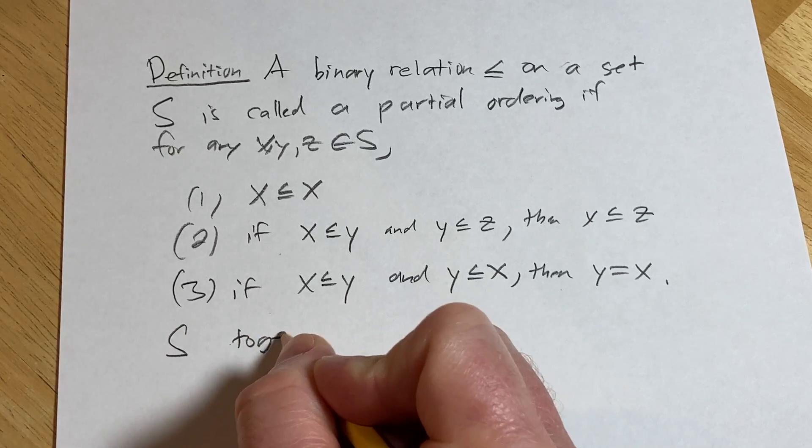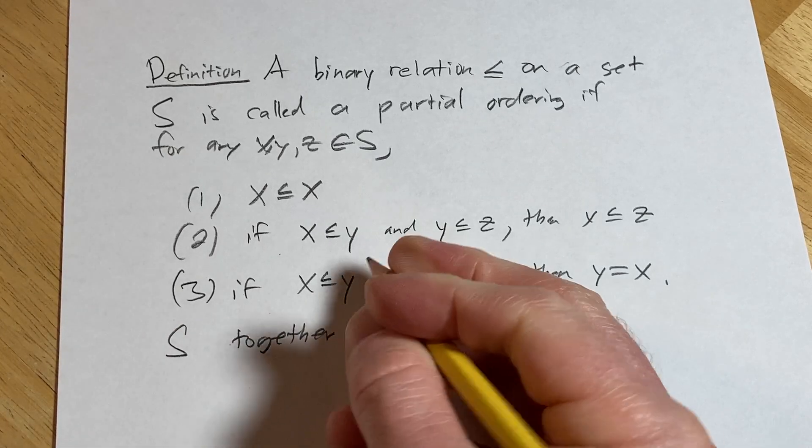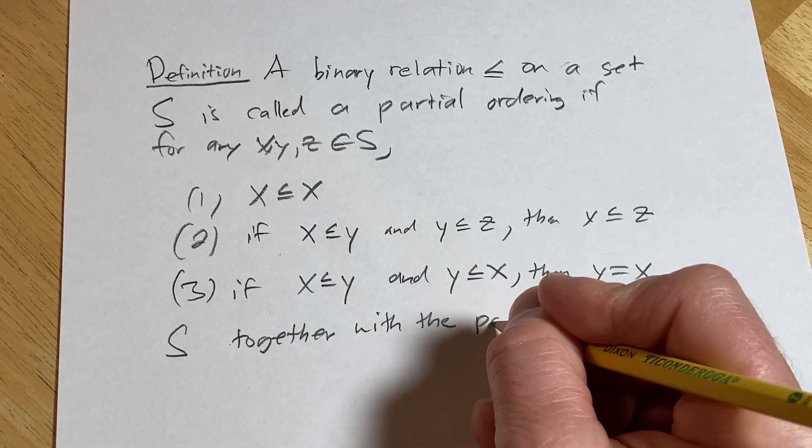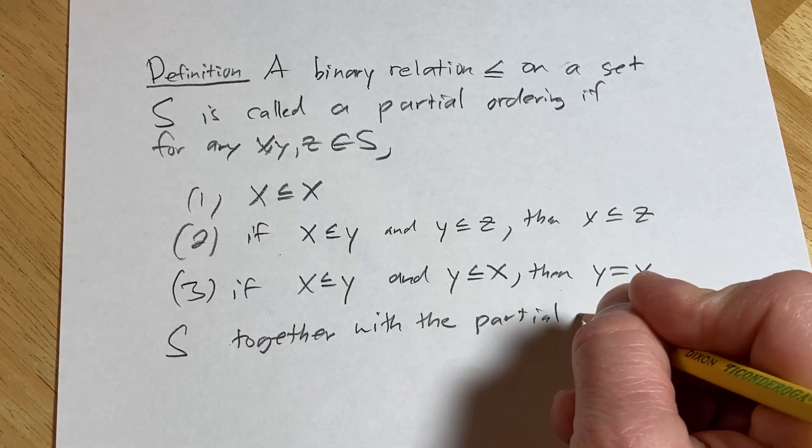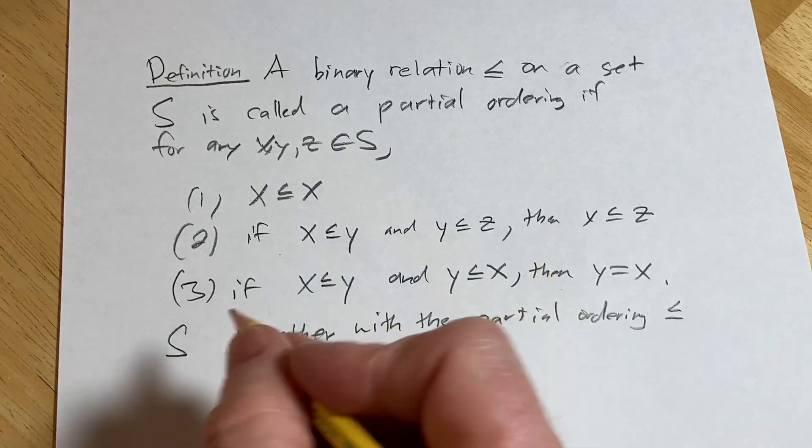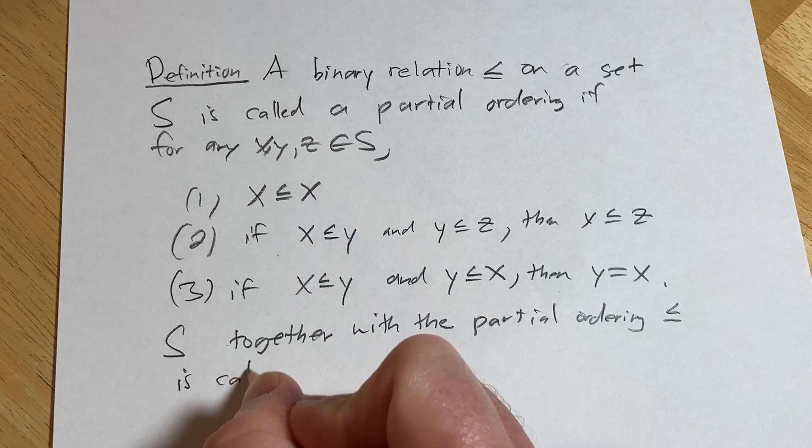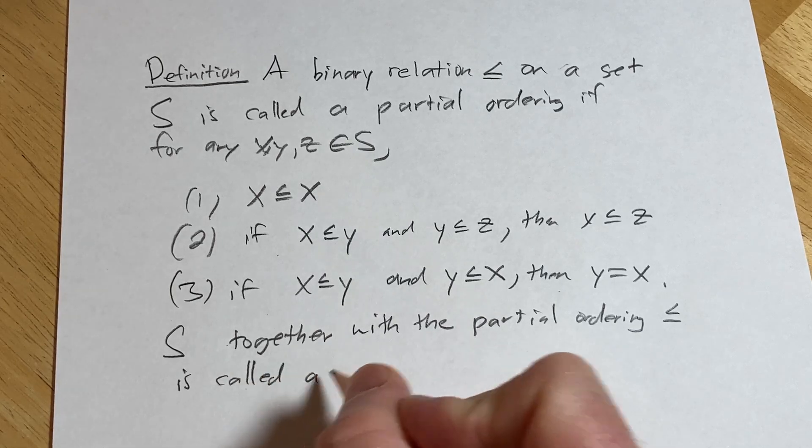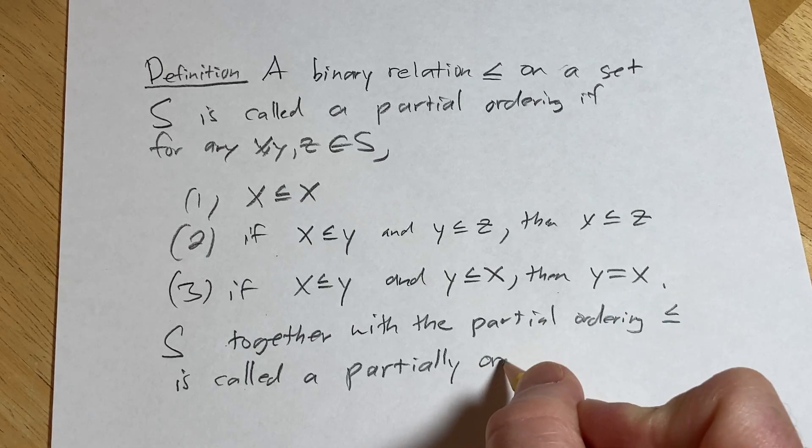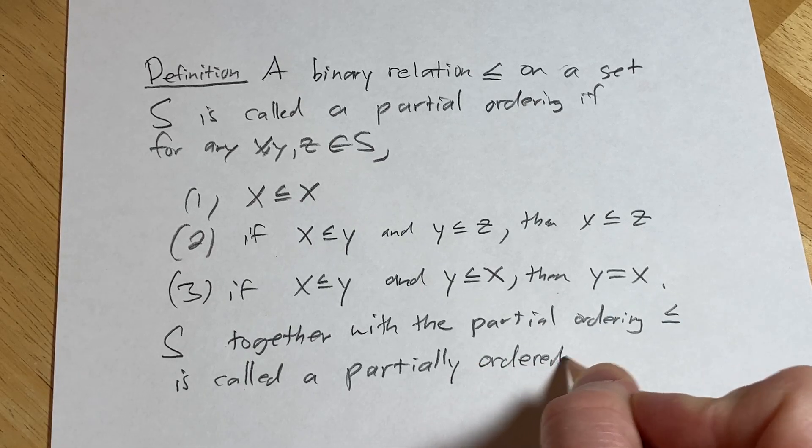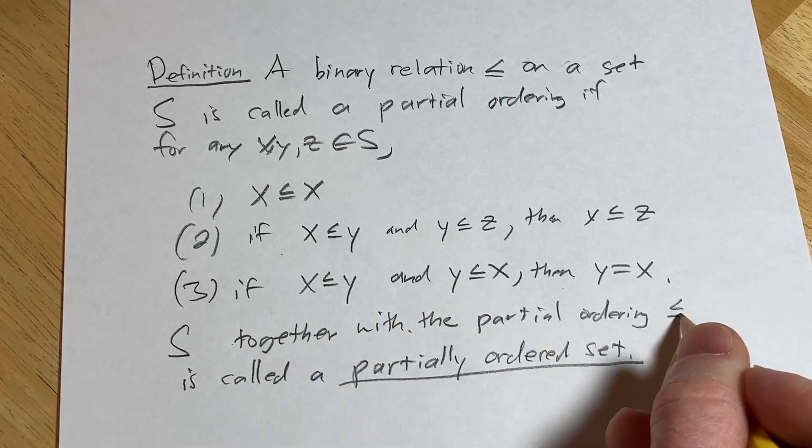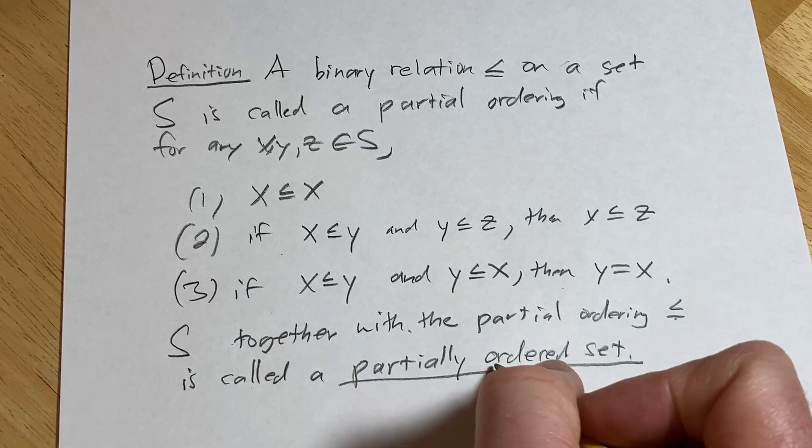S together with the partial ordering that we have defined is called a partially ordered set.